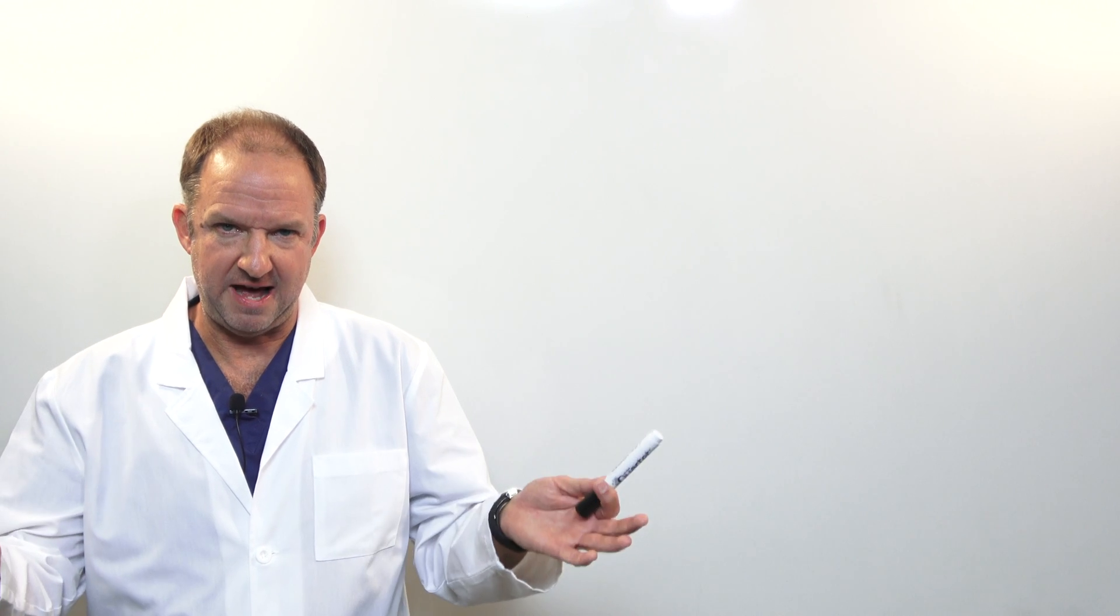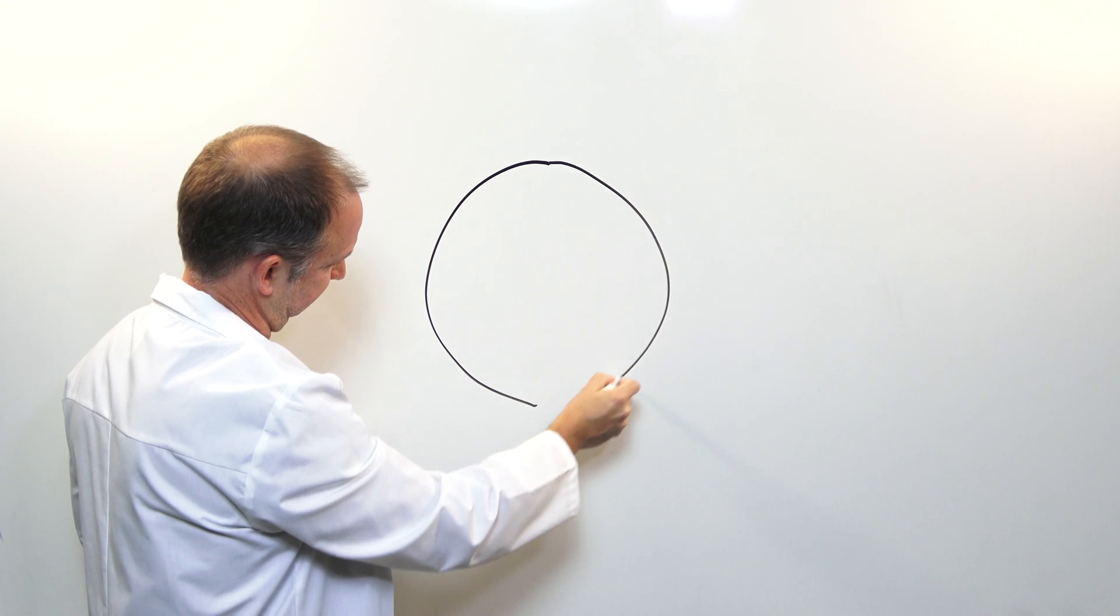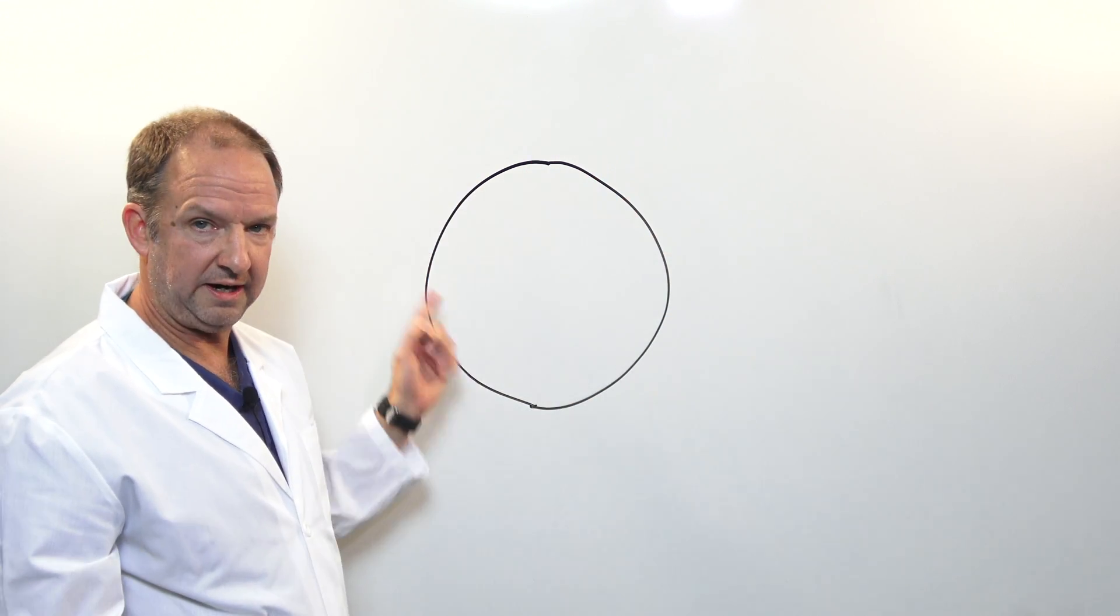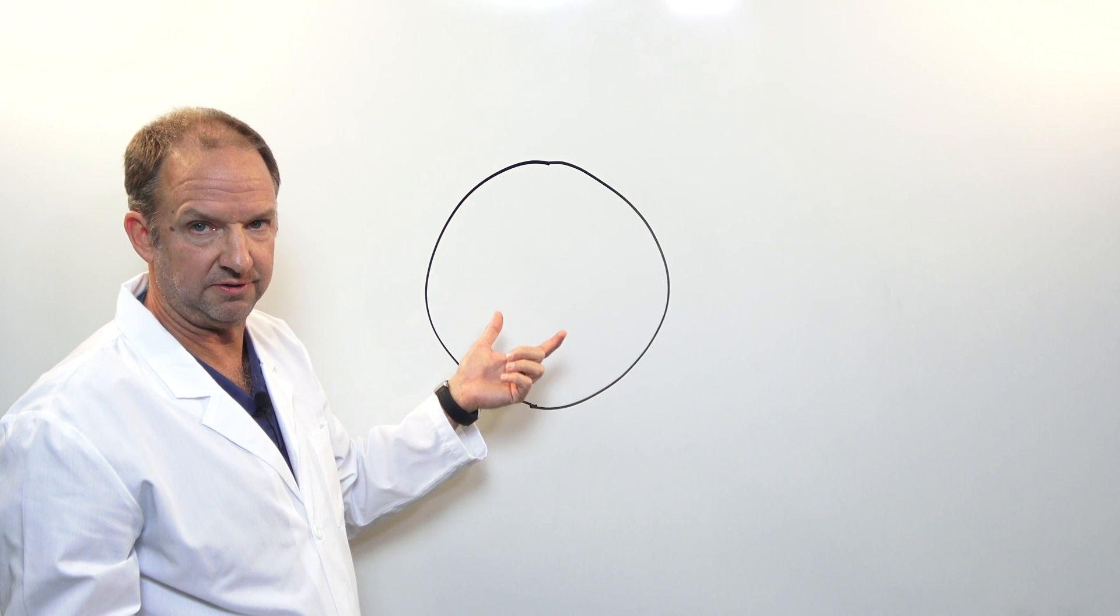If I look at a normal mitral valve, I imagine something like this. A ring or an annulus that basically serves as a hinge point for the valve.